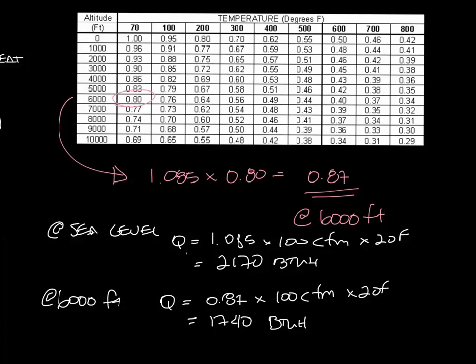Okay, so what this shows you is that that same 100 CFM and 20 degree delta T handles less load at altitude. So basically at altitude, the air is less dense and so it has a reduced capacity for heat transfer.